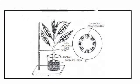Let's see the diagrammatic representation of ascent of sap. Here, a balsam plant twig is placed in a beaker which contains eosin solution. After some time, this coloured solution is transported from down to up, which is called ascent of sap. Due to this, xylem vessels became coloured, and leaves and veins also became red coloured. This experiment demonstrates that water moves from root to shoot in an upward direction through xylem.